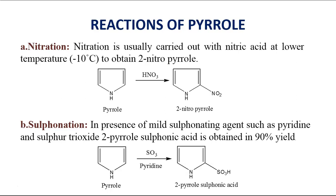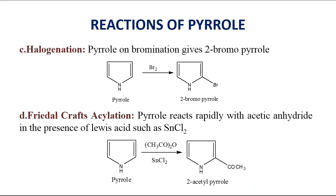First is nitration, which is usually carried out with nitric acid at a lower temperature around minus 10 degrees Celsius. Pyrrole on treatment with HNO3 gives 2-nitropyrrole. On sulfonation in presence of pyridine and sulfur trioxide, we get 2-pyrrolesulfonic acid in 90% yield. For halogenation, Pyrrole on bromination gives 2-bromopyrrole. For Friedel-Crafts acylation, Pyrrole reacts rapidly with acetic anhydride and SnCl2 to give 2-acetylpyrrole, with the acetyl group attached at the second position.